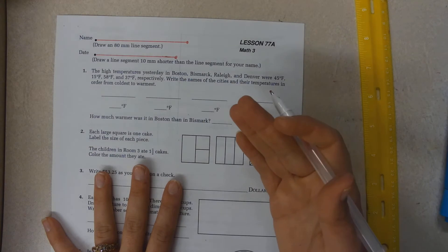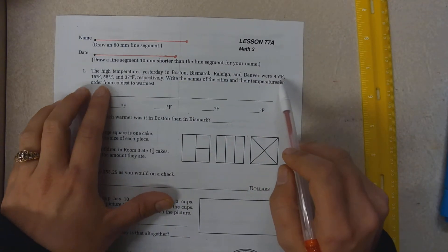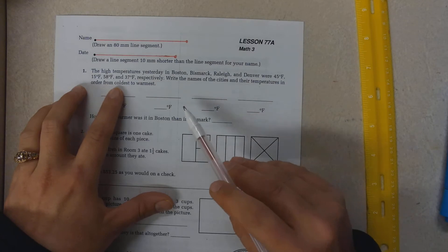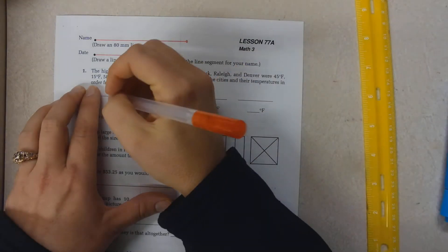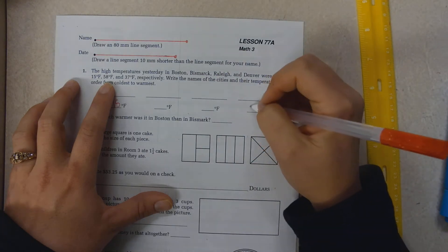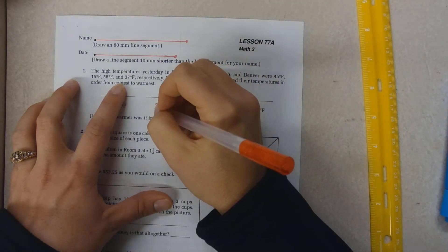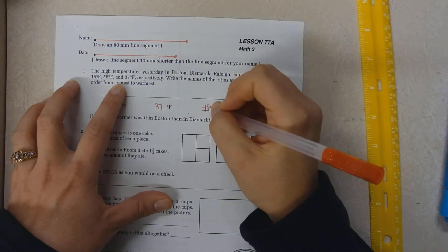So let's start with our numbers. So 45, 15, 58, and 37. So my lowest number is 15 degrees Fahrenheit, and my largest number is 58 degrees Fahrenheit. So that leaves 37 and 45. So 37, 45.